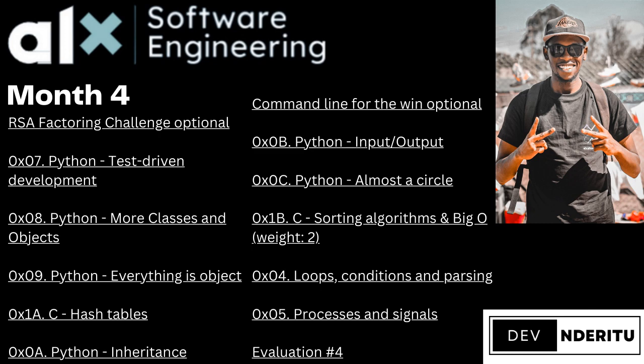The remaining two projects in month four involve loops, conditions, and parsing — those are DevOps processes — along with single signaling. Then you do an evaluation for month four.